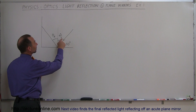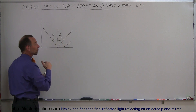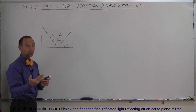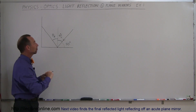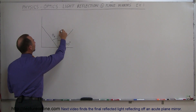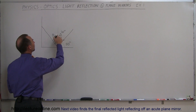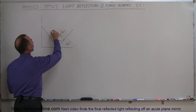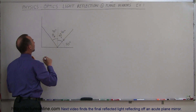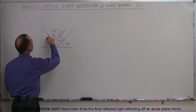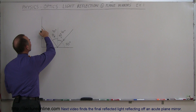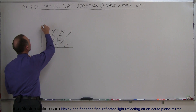If the ray hits the mirror at 50 degrees relative to the mirror surface, then the angle to the normal has to be 40 degrees — 90 minus 50. That makes this a 40-degree angle of incidence, which means the reflected angle also must be 40 degrees.